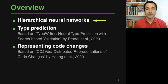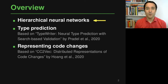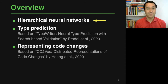Here's an overview of this module. We'll start by looking into hierarchical neural networks in general — what they are, why you want to use them, and when. Then we'll look at the first application, which is about type prediction, and also the second application. Both are based on recent research, on papers written just this year. If you're interested in more details, you're welcome to have a look at these papers.